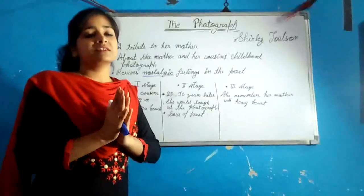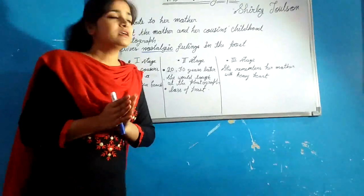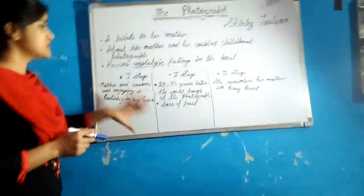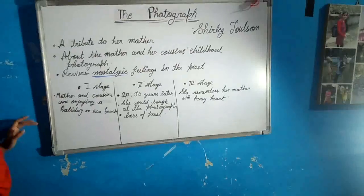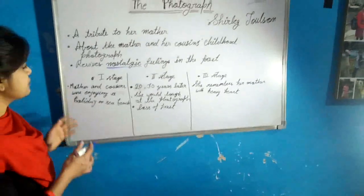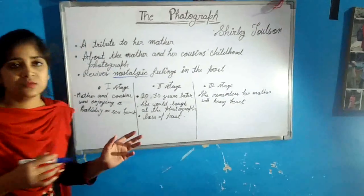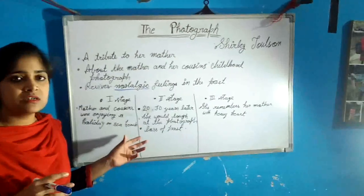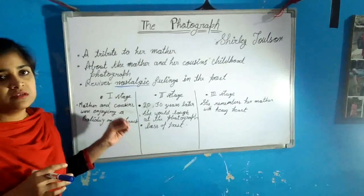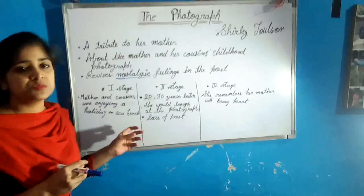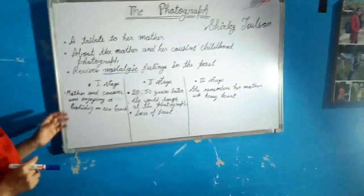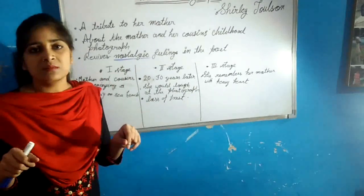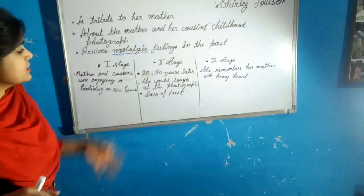This poem has three stages. In the first stage, the poet got a photograph in which there were three girls. These three girls are her mother and her mother's cousins. Her mother must be about 12 years old, and they were enjoying a holiday on the sea beach — in that photograph there was a scene of the sea beach where they were enjoying their holiday.